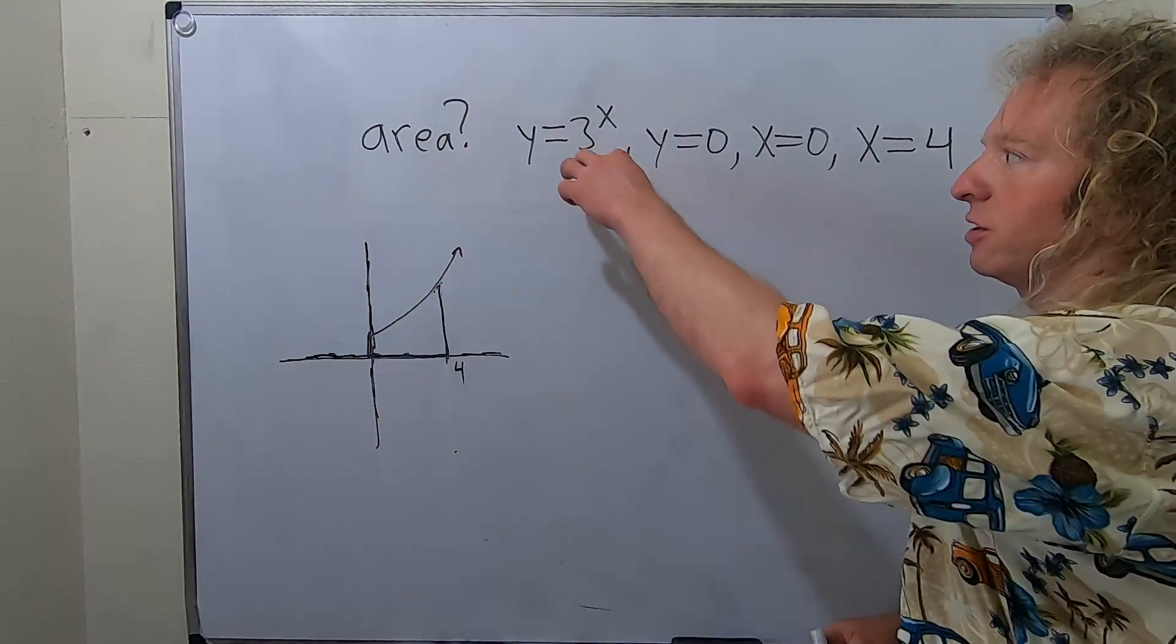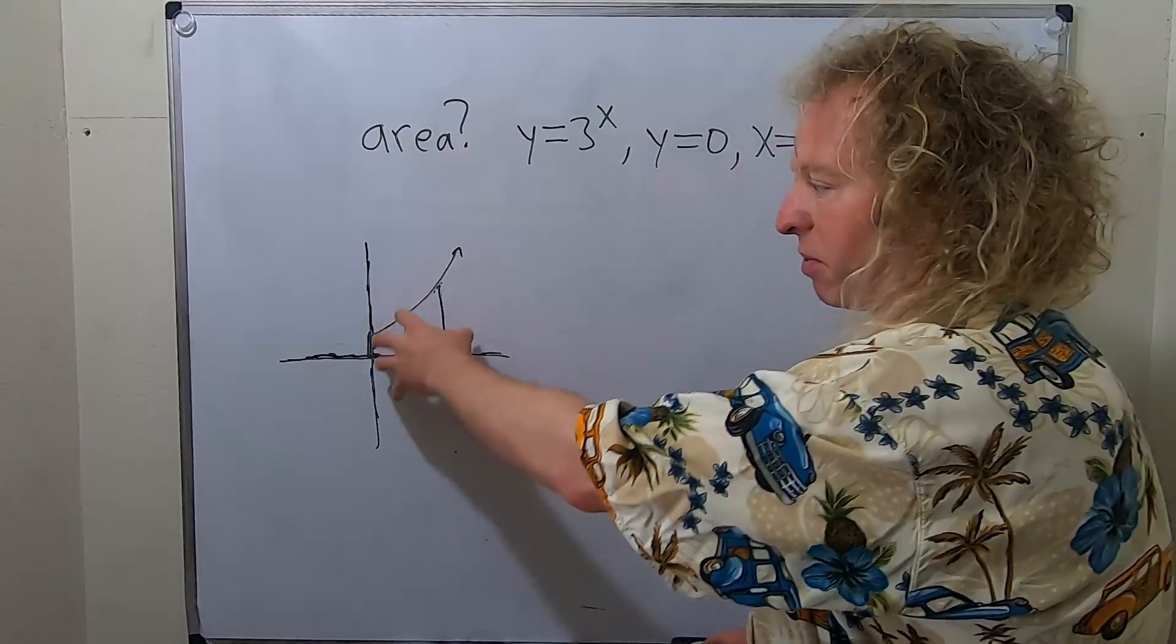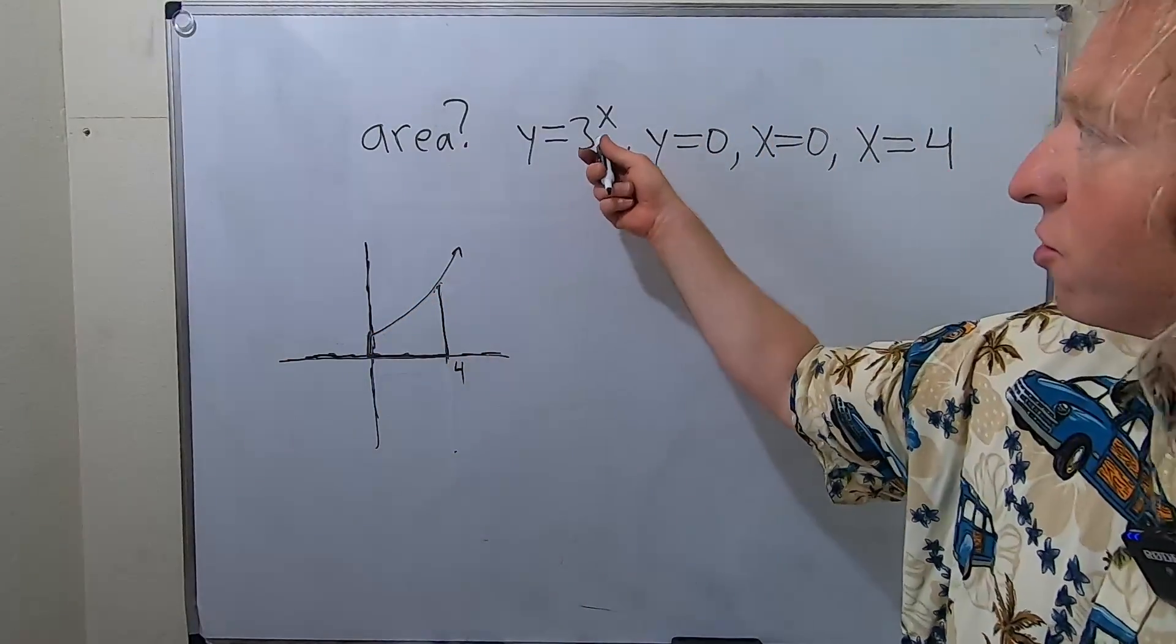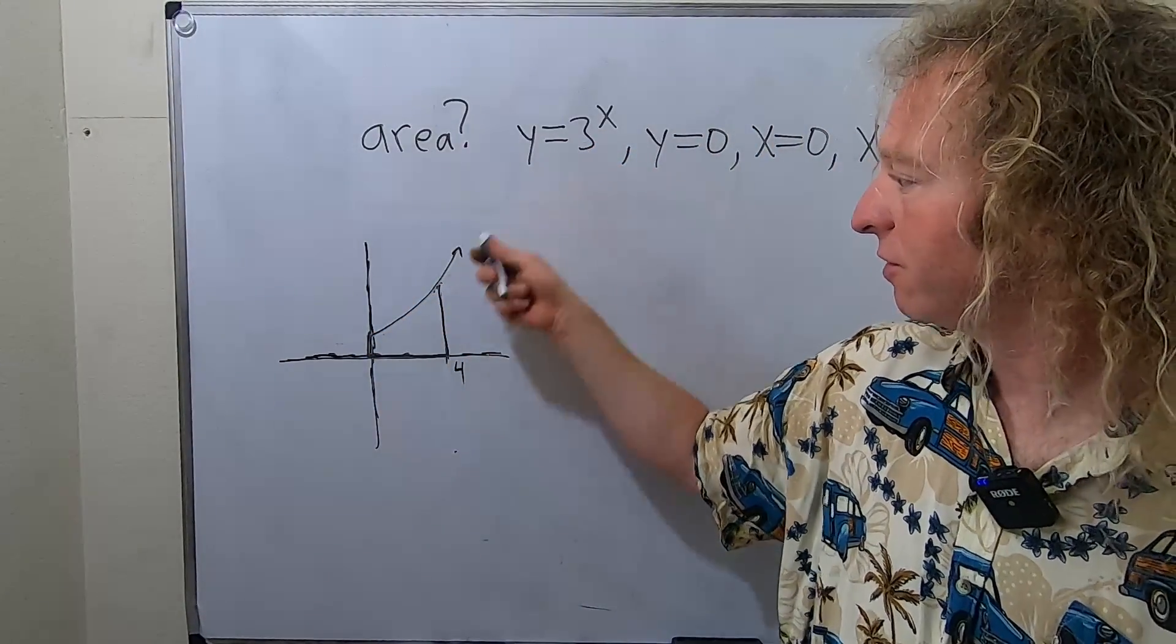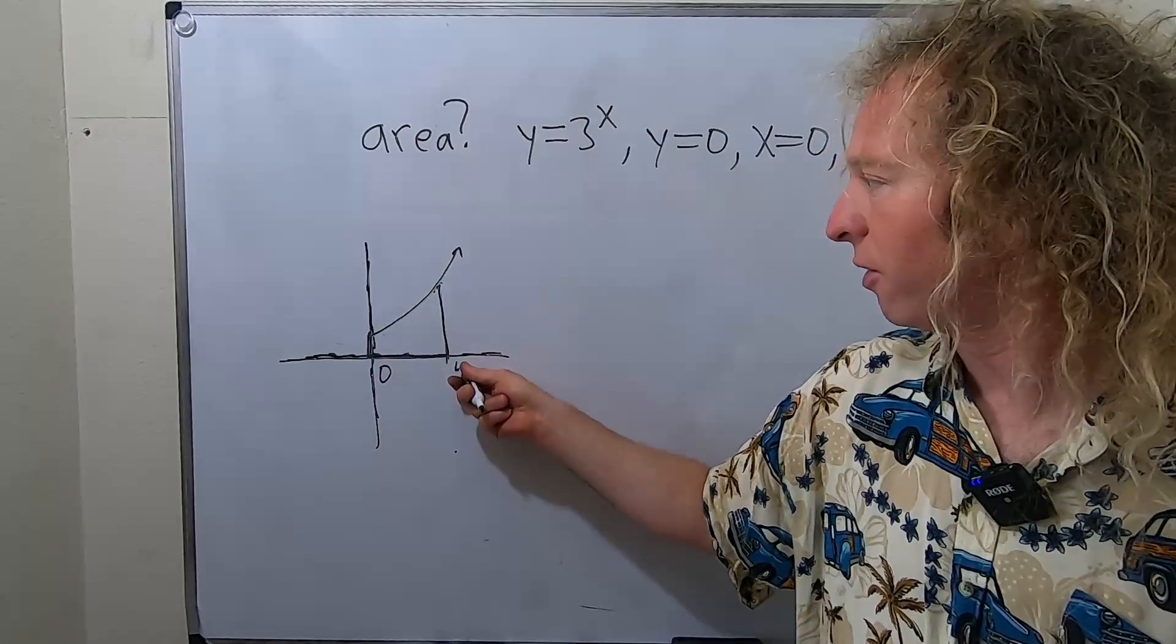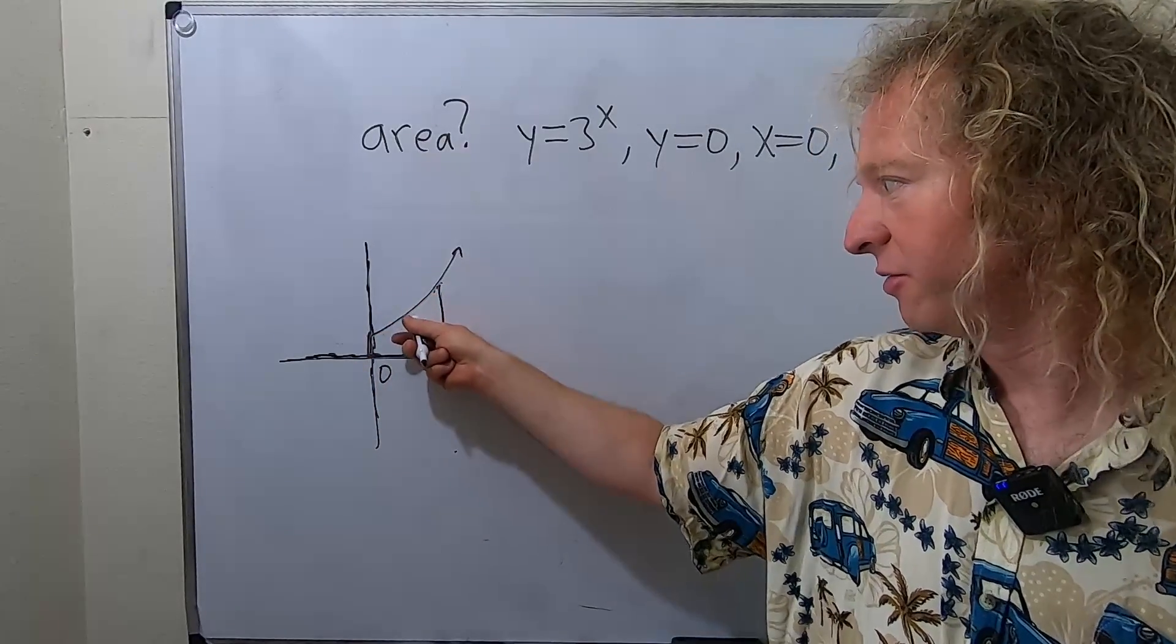So recall, whenever you have a function that's non-negative, so it's above the x-axis, the integral of this function from, in this case, from 0 to 4, is going to give you the area under this curve.